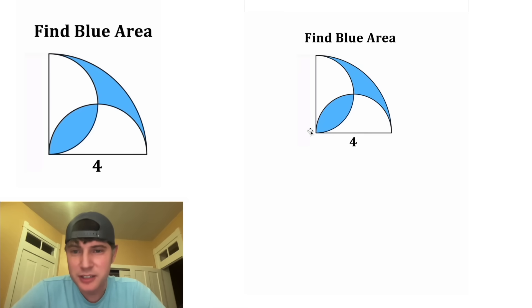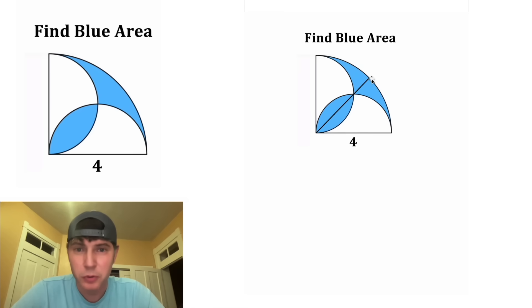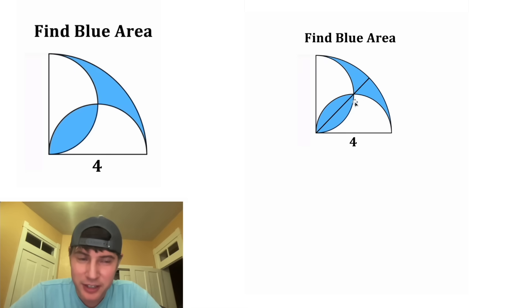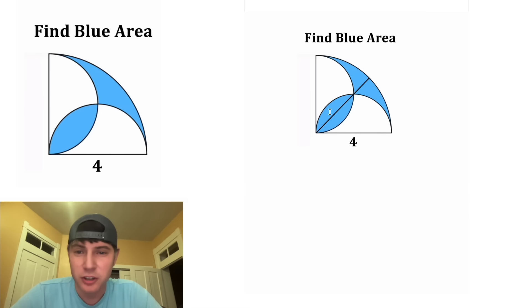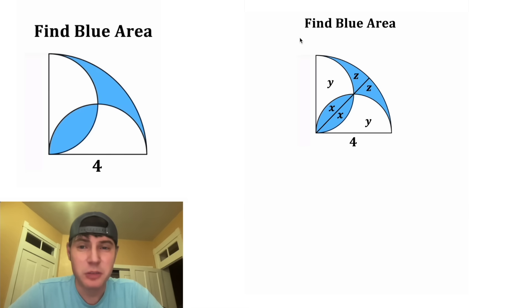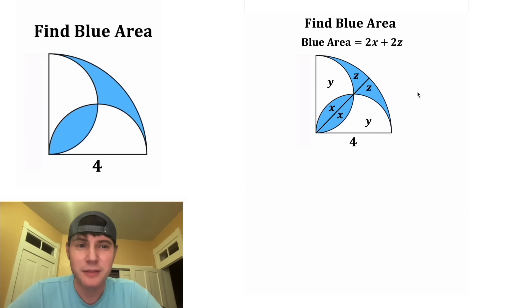Let's connect the radius that goes from here through this point to here. And that's going to cut everything in half. So we will have two of these blue things, two of these white things, and two of these blue things. Let's call these two x, these two y, and these two z. And now we have a way to express our blue area — it's going to be equal to 2x plus 2z.